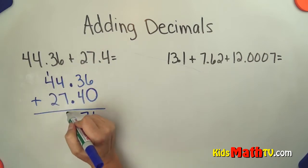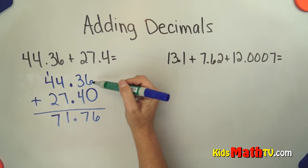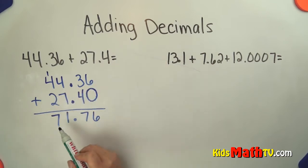7 plus 4 is 11, 4, 5, 6, 7. So 44 and 36 hundredths plus 27 and 4 tenths is 71 and 76 hundredths.